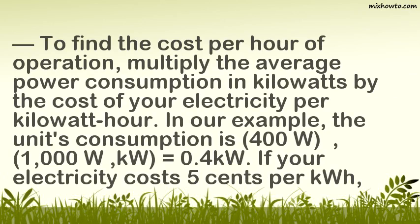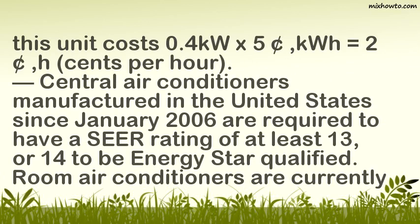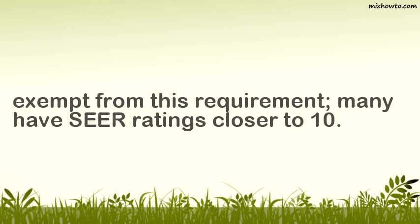To find the cost per hour of operation, multiply the average power consumption in kilowatts by the cost of your electricity per kilowatt-hour. In our example, the unit's consumption is 400 W ÷ 1,000 W/kW = 0.4 kilowatts. If your electricity costs 5 cents per kWh, this unit costs 0.4 kW × 5 cents/kWh = 2 cents per hour. Central air conditioners manufactured in the United States since January 2006 are required to have a SEER rating of at least 13, or 14 to be ENERGY STAR qualified. Room air conditioners are currently exempt from this requirement. Many have SEER ratings closer to 10.